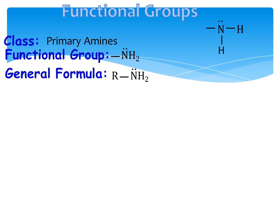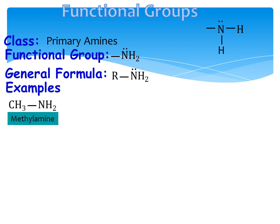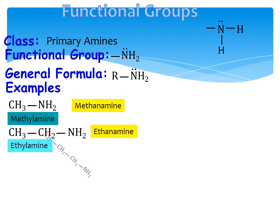The general formula for primary amines is R-NH2. An example is CH3-NH2 — since CH3 is the methyl R group, the common name is methylamine. The IUPAC name is methanamine (replace 'e' of methane and write 'amine'). With an ethyl group instead, it is called ethylamine or ethanamine.